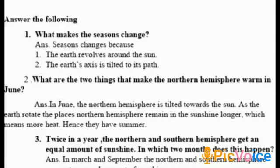Question one: what makes the seasons change? Seasons change because the earth revolves around the sun and the earth's axis is tilted to its orbit. Question two: what are the two things that make the northern hemisphere warm in June? In June the northern hemisphere is tilted towards the sun, and as the earth rotates, those places remain in sunshine longer, which means more heat — hence they have summer. Question three: in March and September, the northern and southern hemispheres get an equal amount of sunshine.